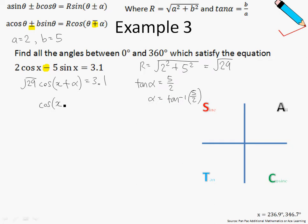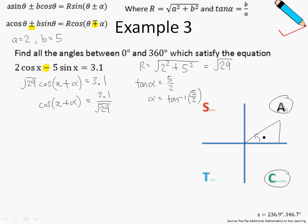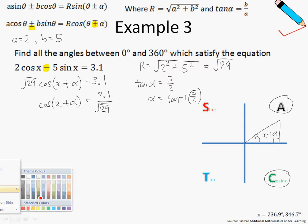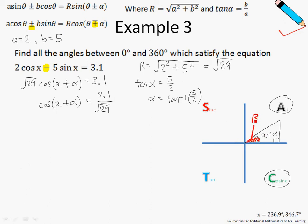So this gives us square root of 29 times cosine of x plus alpha equals to 3.1. Working this out further, cosine of x plus alpha equals 3.1 over square root of 29. Since the cosine gives me a positive value, using our ASTC diagram, we can either be in the A quadrant or the cosine quadrant. This angle here is actually my x plus alpha. Let me work out my basic angle — we'll call it beta — so beta, the basic angle, should be cosine inverse of 3.1 over square root of 29.